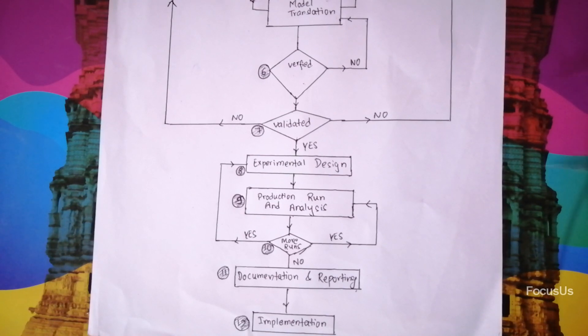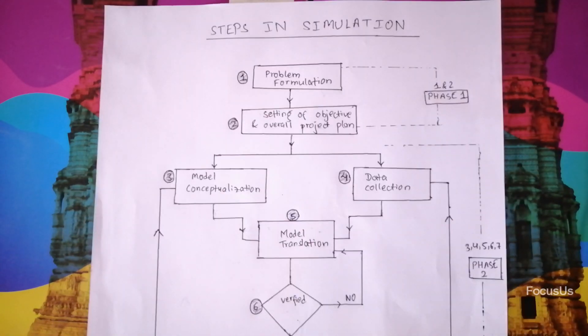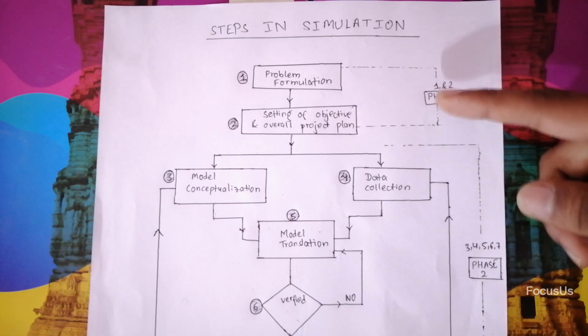So this was the steps in simulation involved. Now let's see different phases in simulation. There are four phases in simulation. And once we have studied the steps in simulation, which is this diagram right here, then four phases of simulation is very easy. There are four phases of simulation: number one and number two.